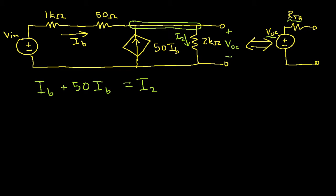I2 is the current through this 2k ohm resistor. And the current through this 2k ohm resistor is going to be the VOC, that's the voltage across the resistor divided by 2k ohms.